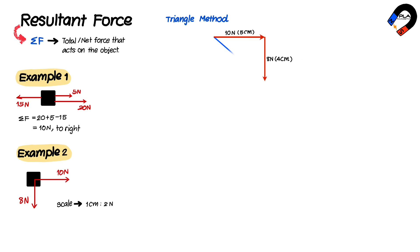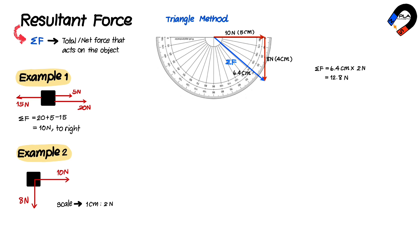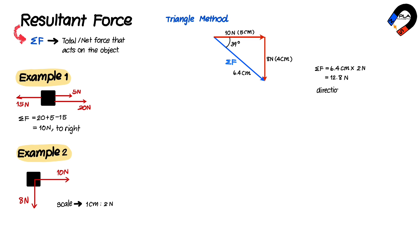Link the head of the 10 Newtons force to the tail of the 8 Newtons force and draw 8 Newtons for 4 centimeters. The resultant force is formed by connecting the tail of the 10 Newtons force to the head of the 8 Newtons force. Measure the length: the magnitude is 6.4 centimeters × 2 Newtons = 12.8 Newtons, and the direction is 39 degrees to the 10 Newtons force.